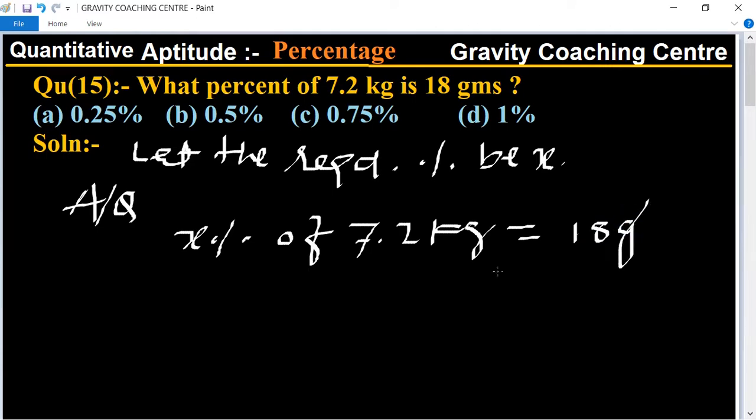So x upon 100 multiply 7.2 kg, and we change it into grams by multiplying by 1000.